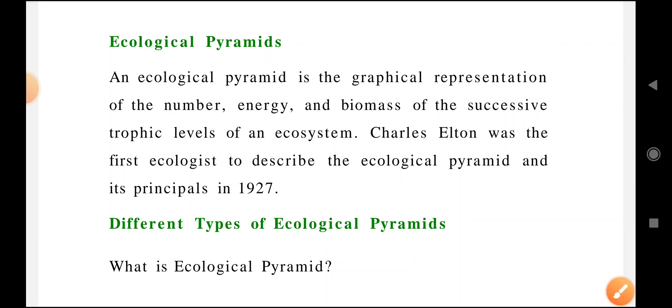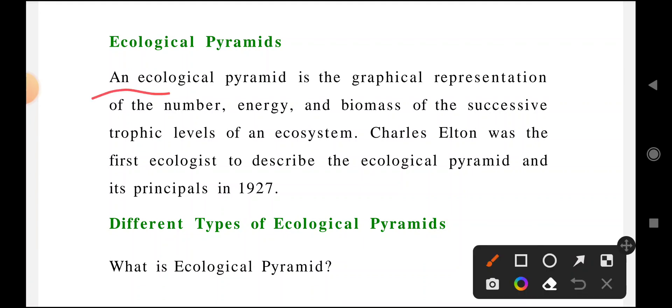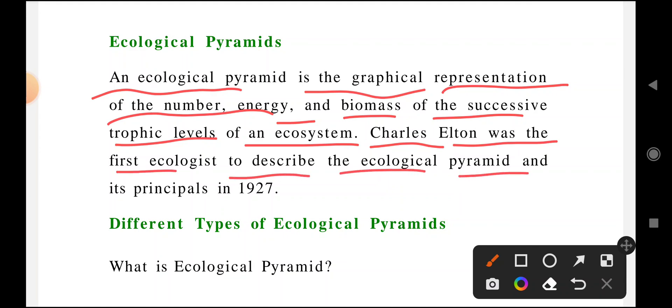An ecological pyramid is a graphical representation of number, energy, and biomass of successive trophic levels in an ecosystem. In an ecosystem there are different levels, and at each level there will be organisms. Charles Elton was the first ecologist to describe the ecological pyramid and its principles in 1927.